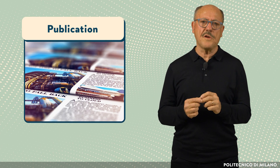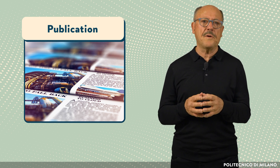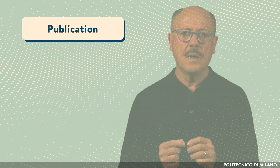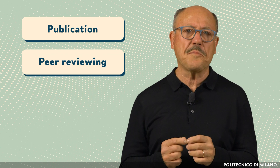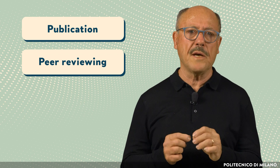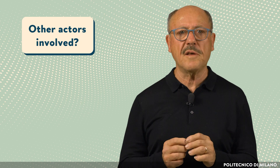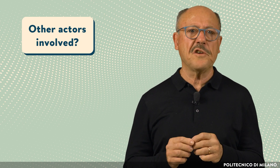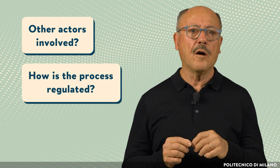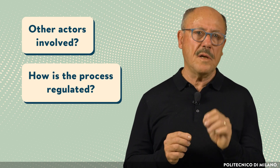Publication is an important process in research. We have seen that peer-reviewing ensures that papers submitted for publication reach certain scientific standards. Peer-reviewing is an essential aspect of the process, but there are other aspects that need to be understood by researchers. Who are the other actors involved in the publication process, and since publications are made available worldwide, how is the process regulated on a global scale? These are the questions I try to answer in this lecture.